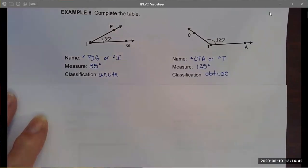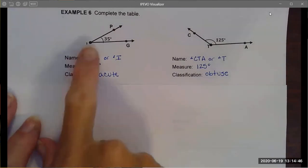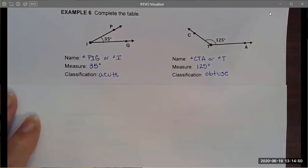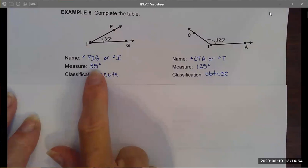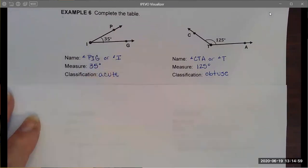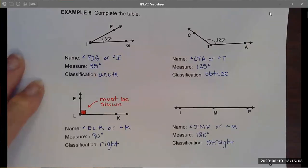I'm not going to belabor those because again I feel like we are pretty attuned to those. We can do some examples where we're asked to classify angles. I named this particular angle PIG, angle PIG, or because it's an angle in isolation I could also call it angle I. Its degree measure is 35 and it is an acute angle because this measure is less than 90. I'm going to let you take a look at the remaining three examples.